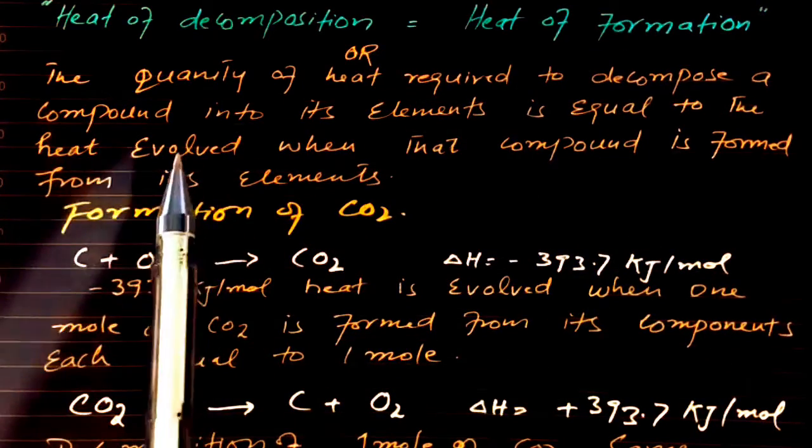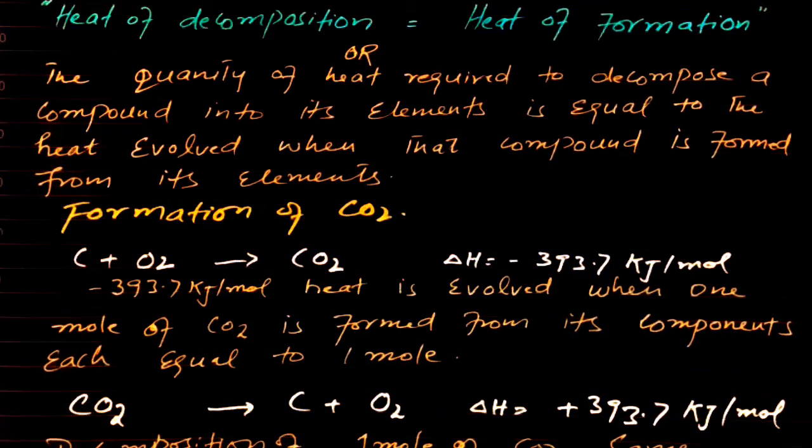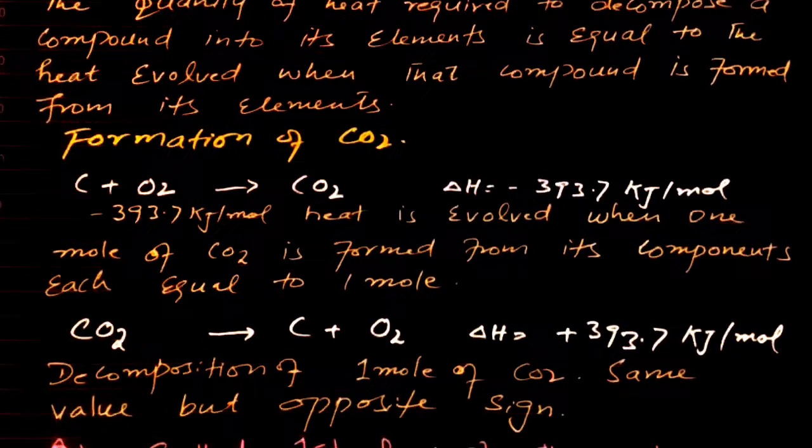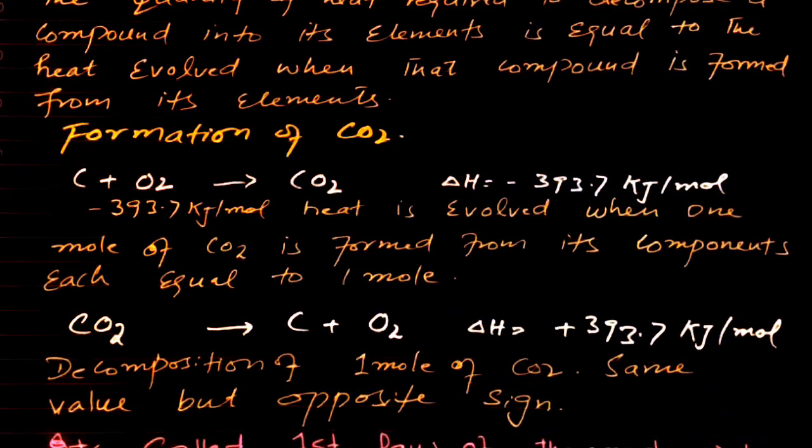The quantity of heat required to decompose a compound into its elements is equal to the heat evolved when that compound is formed from its elements. For example, we consider carbon dioxide. We will discuss the formation of carbon dioxide and then the decomposition of carbon dioxide. You will see in both cases the energy will be same but with opposite sign.